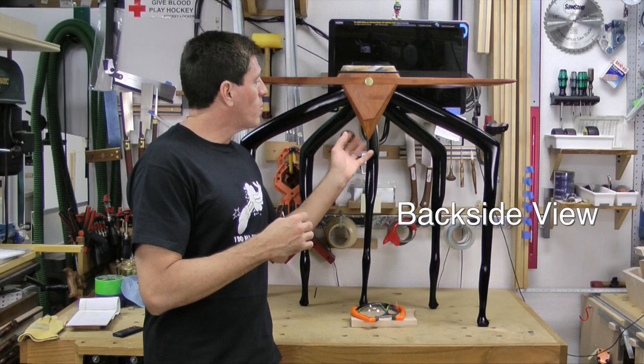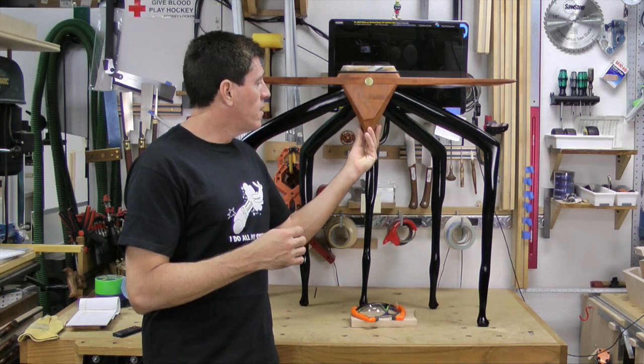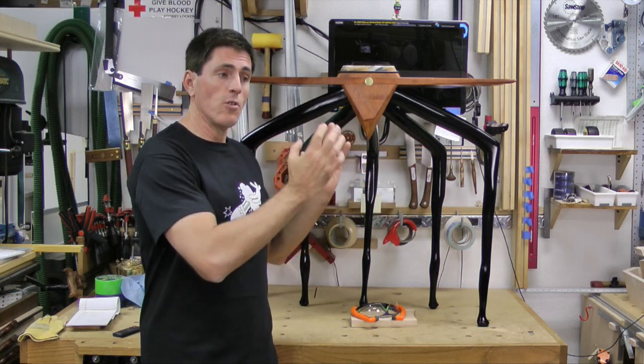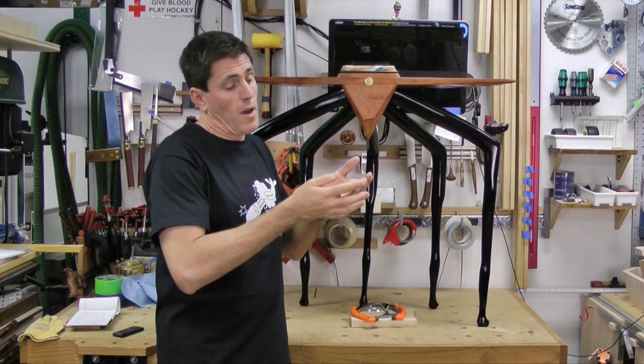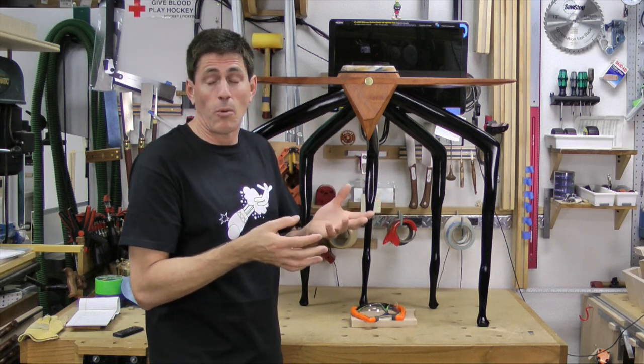And what this is about is when I created this octagon, I created all seven sides of it because I knew that the compounding of errors was gonna make it that the eighth side really wasn't gonna fit perfectly anyway.